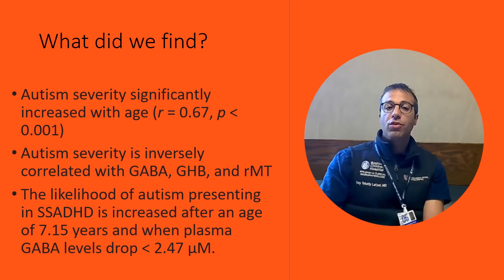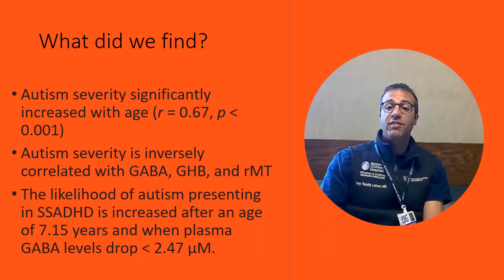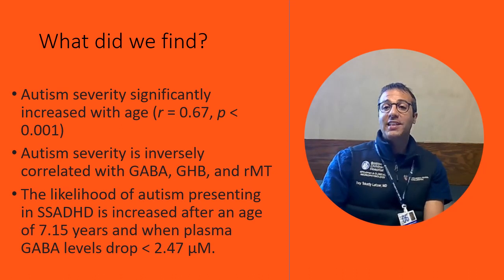We also saw that the likelihood of autism presenting in SSADH deficiency is increased once these individuals pass the age of 7.15 years, and once their plasma GABA levels drop below 2.47 micromole.